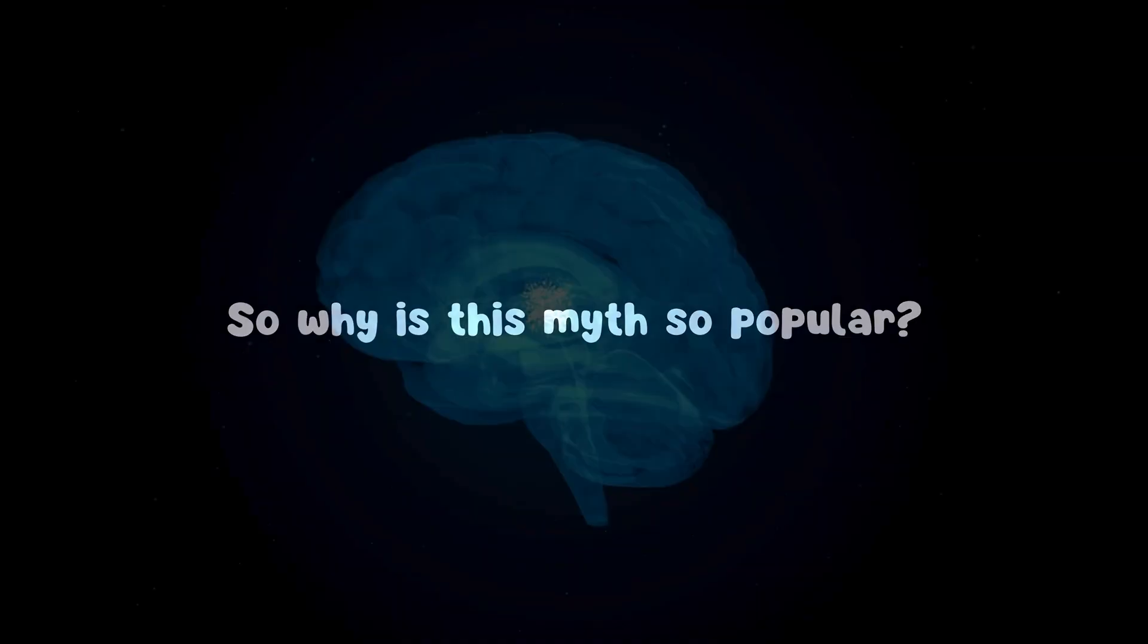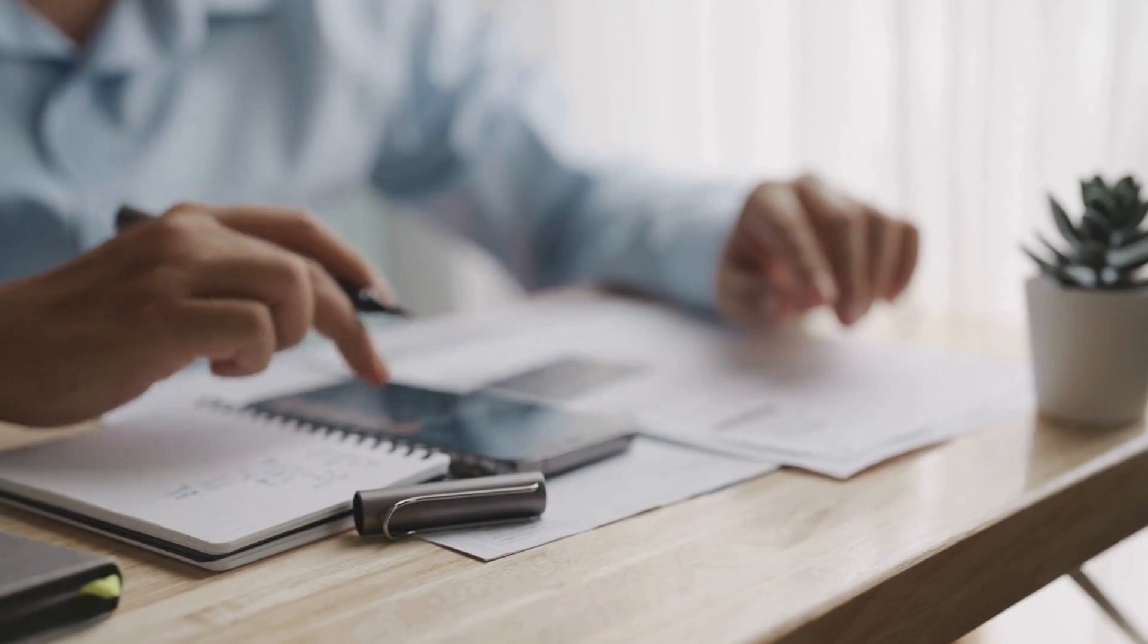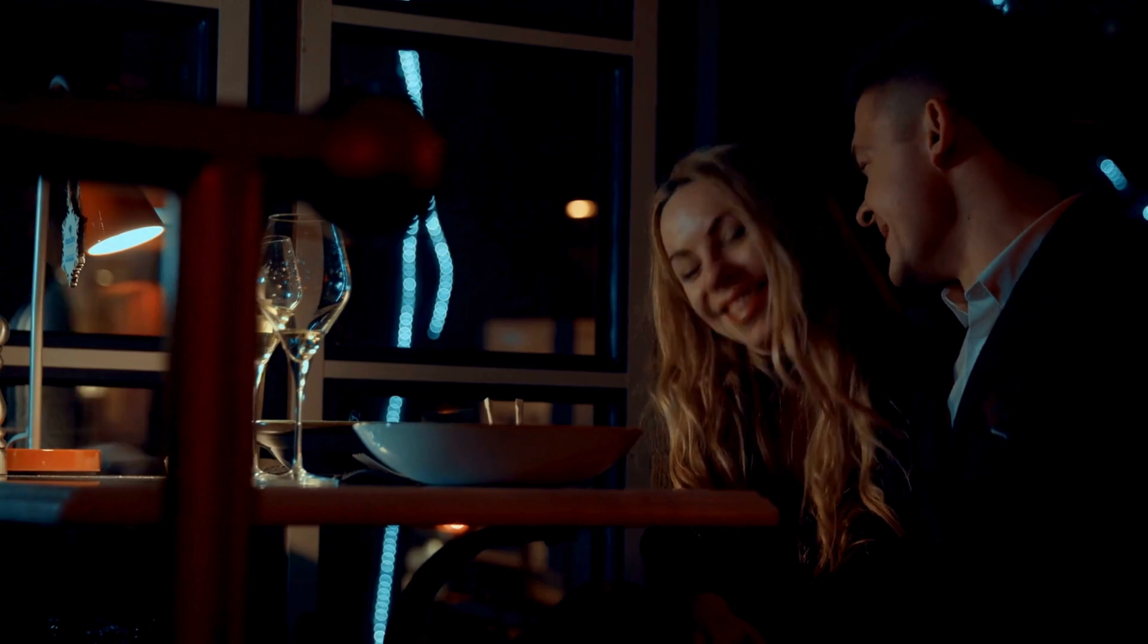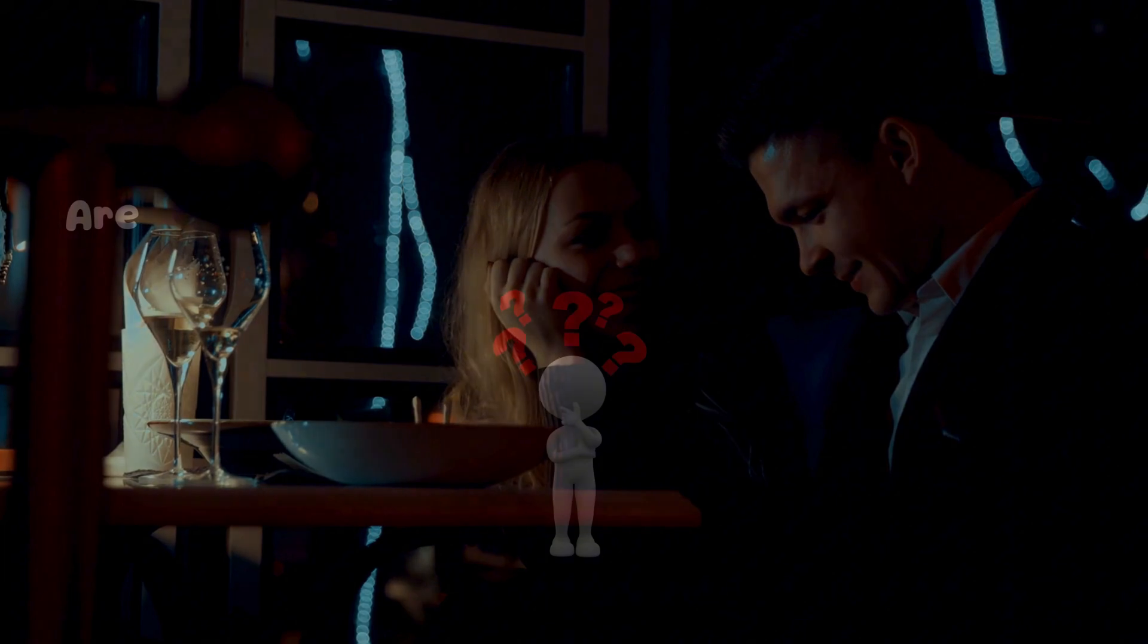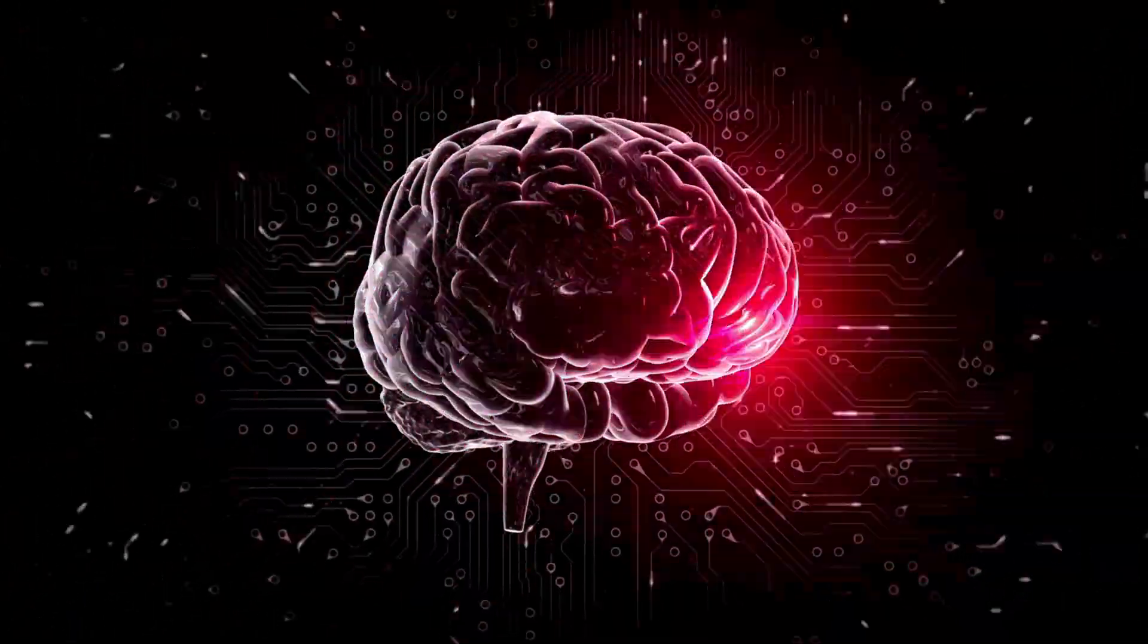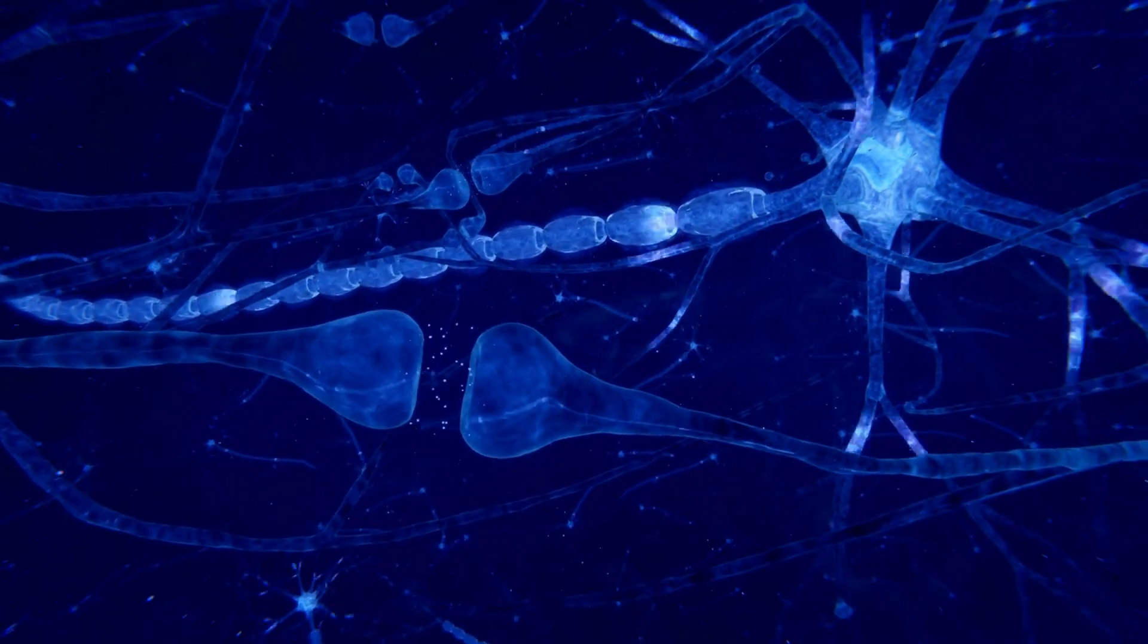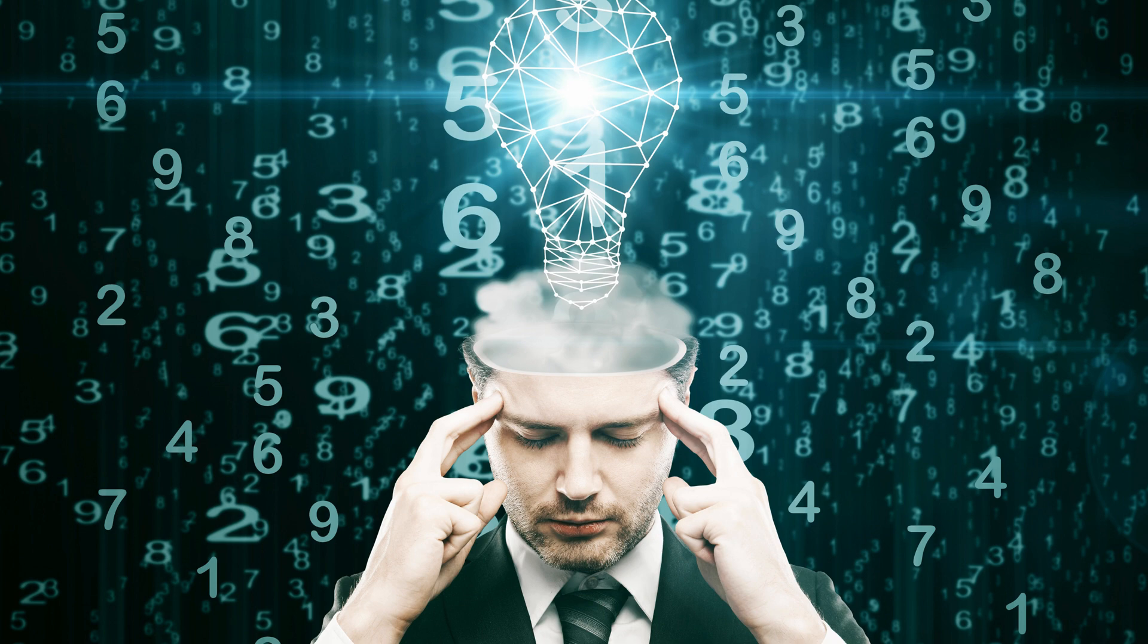So why is this myth so popular? The reason might be that not all parts of the brain work at the same time. When you're solving a math problem, the logical part of your brain takes charge. When you laugh, the emotional center lights up. But that doesn't mean the rest of your brain is just sitting idle. Are we really using 100% of our brain's potential? Not necessarily. The human brain is still full of mysteries that science hasn't completely unraveled. But what if, somehow, we could unlock its full potential? Would we become geniuses overnight, or would we simply finally remember where we put our keys?